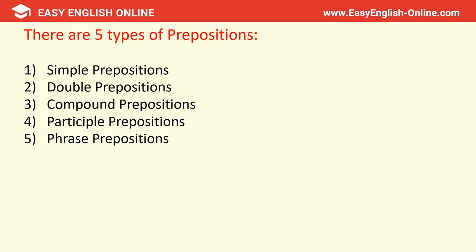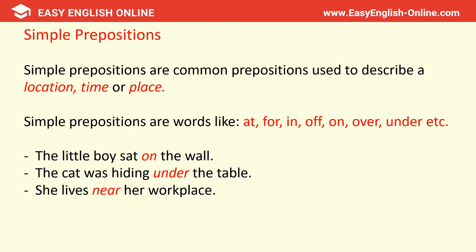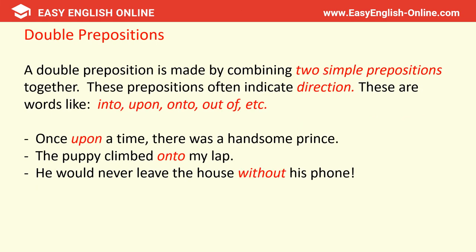There are five types of prepositions: simple, double, compound, participle, and phrase prepositions. Simple prepositions are common prepositions used to describe a location, time, or place — words like at, for, in, off, on, over, and under. For example: 'The little boy sat on the wall,' 'The cat was hiding under the table,' 'She lives near her workplace.'